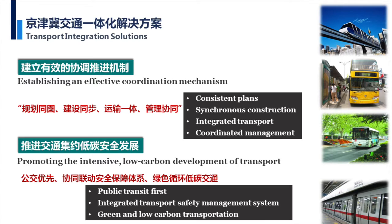Number five: we should establish an effective coordination system or mechanism, which is of great importance. Breaking these administrative barriers requires a very effective and efficient mechanism so that we can better integrate public transit. Finally, we need to promote the intensive low-carbon development of transport. We should give priority to public transit, have an integrated transport safety management system, and have green and low-carbon transportation in place. These are the initial considerations for these areas.